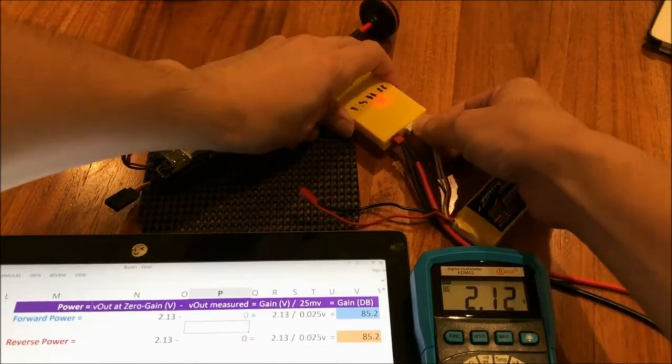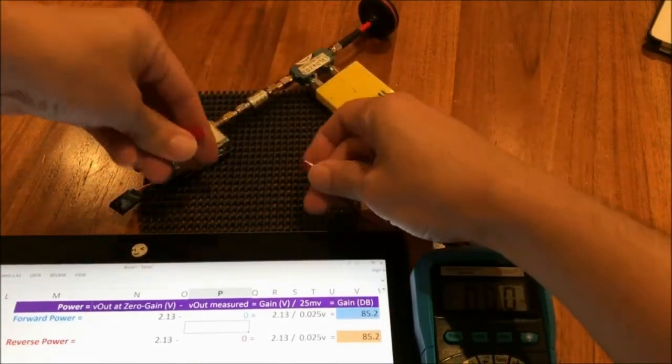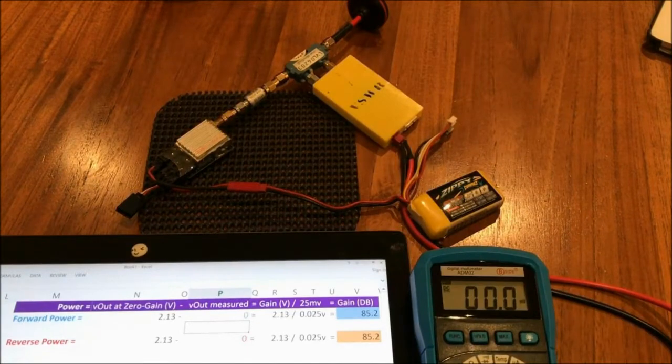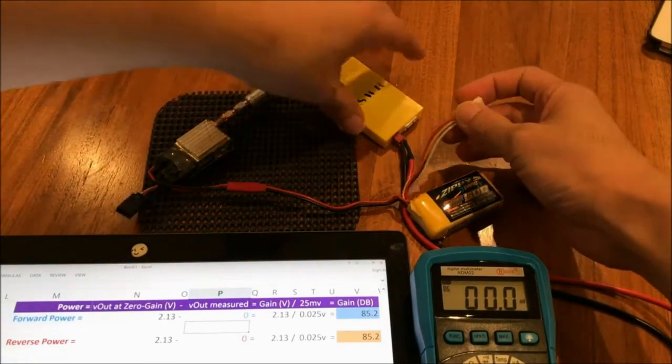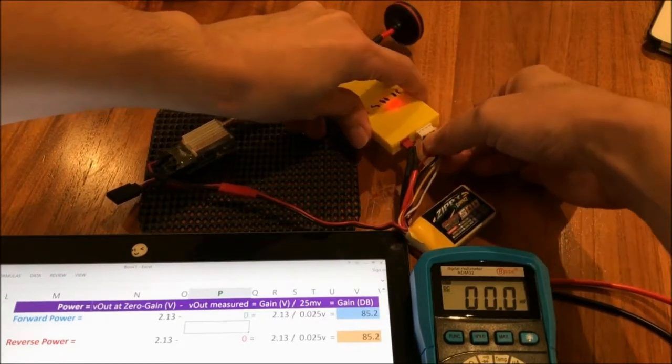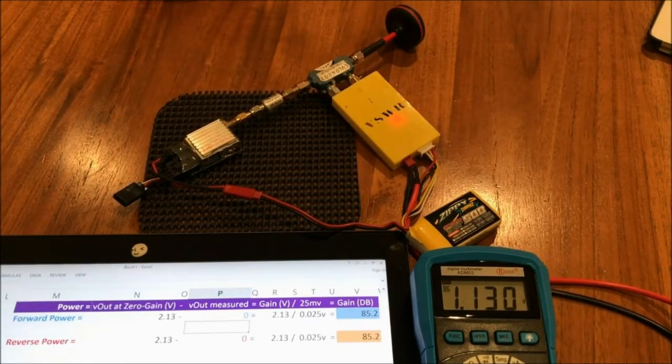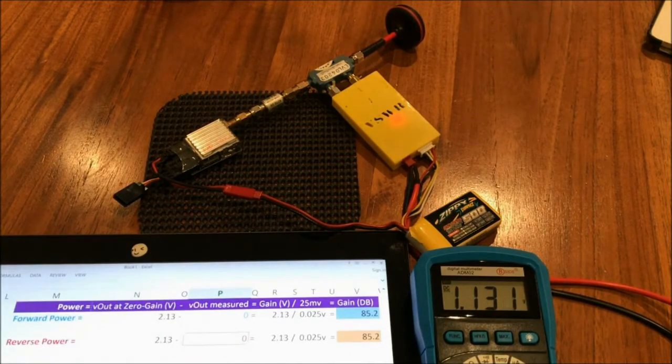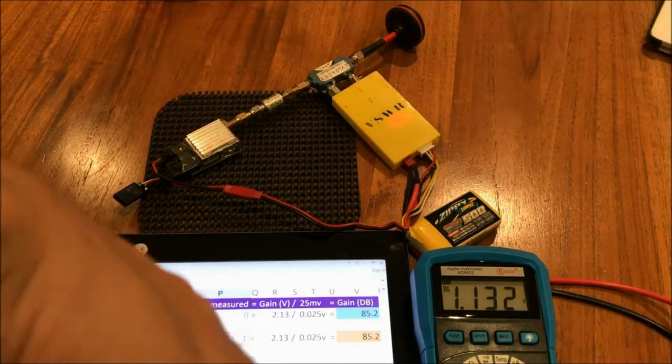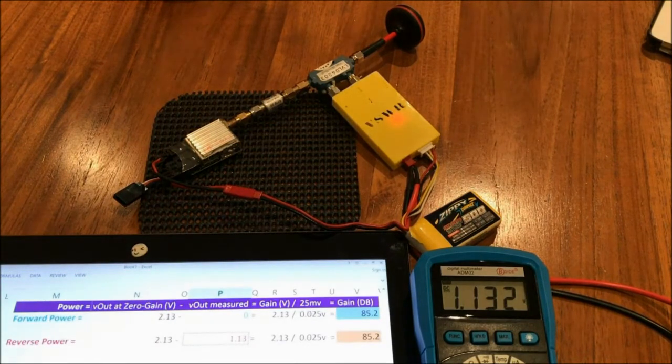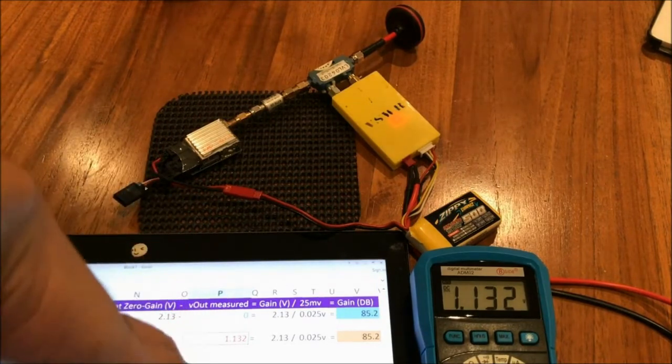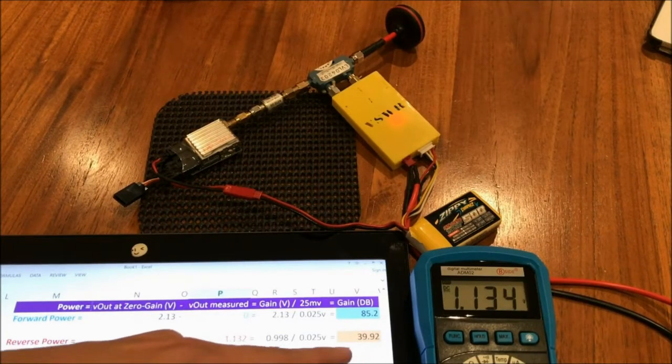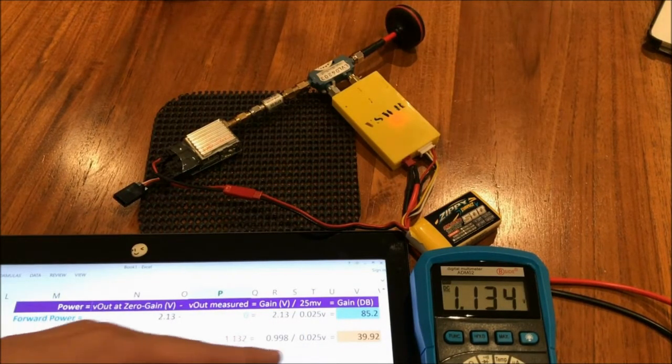So let me power off the RF meter so that I could power on the video transmitter. Then let it stabilize for a while first before taking reading. Okay, that will do. It should be stabilized now. And I'm going to power on the RF meter. And we're getting 1.130 for the reverse power. So I'm going to punch that in here into the spreadsheet. 1.13. And we have the gain of 39.92. More about how it arrived at this number later on.